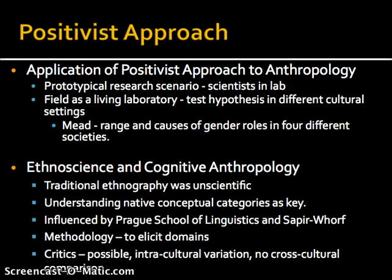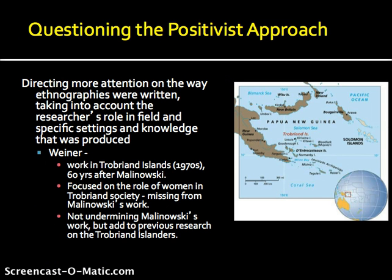Some of the other critiques of positivism point to the fact that many early positivists framed their research as being both omnipresent and omniscient — that is, the researcher or anthropologist was everywhere at once and knew everything about what was going on. More recent accounts, such as Werner's work amongst the Trobriand Islanders — whose main focus was on women, while Malinowski's was on men — produced very different accounts of Trobriand Island society. The critique is that Malinowski's focus on men does not necessarily mean he knew all of what was happening in Trobriand society. Having multiple ethnographers, male and female, studying the same society helps to get a larger picture of what's happening overall.